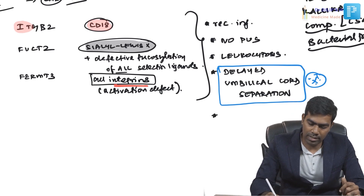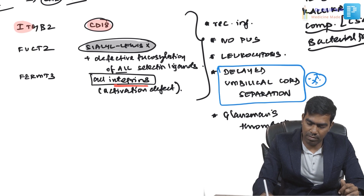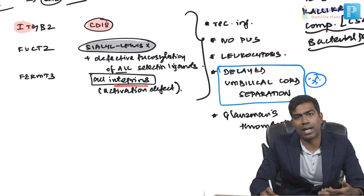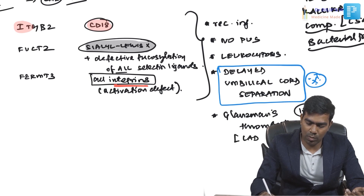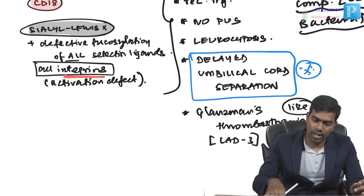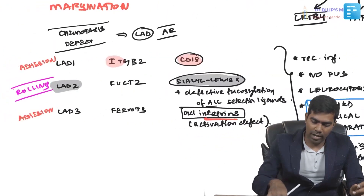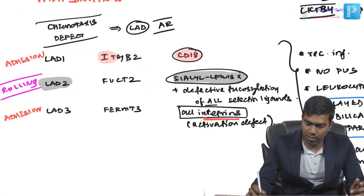Patients may also present with a Glanzmann's thrombasthenia-like picture, where there is defective platelet aggregation. This is seen only in LAD type 3, not in LAD type 1 or LAD type 2.